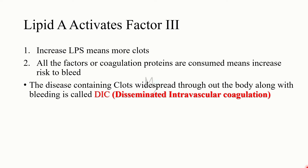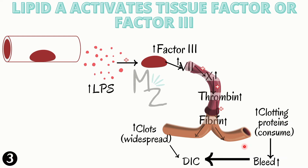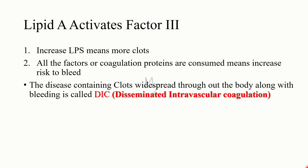With increased LPS, fibrin forms more and more clots. Because all the coagulation factors and clotting proteins are consumed in this process, there is an increased risk of bleeding. So there is both clot formation and bleeding simultaneously. This disease — containing widespread clots throughout the body along with bleeding — is called disseminated intravascular coagulation, or DIC.